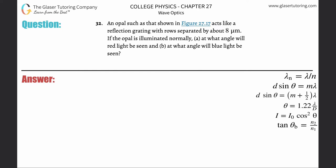An opal such as that shown in the figure acts like a reflection grading with rows separated by about 8 micrometers. If the opal is illuminated normally, letter A, at what angle will the red light be seen?